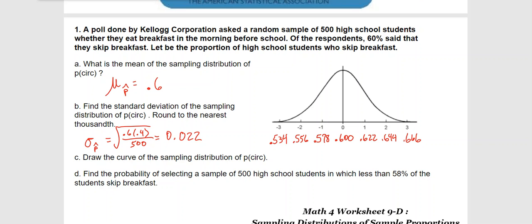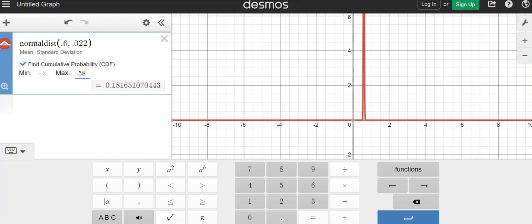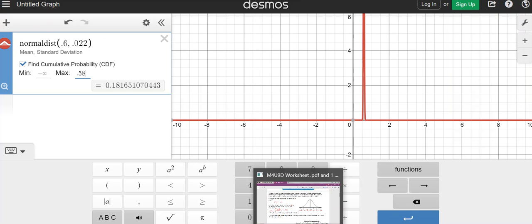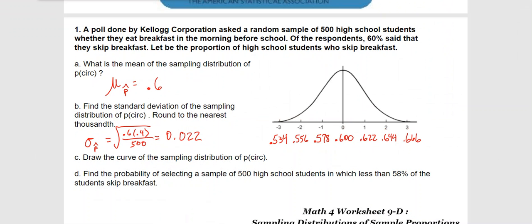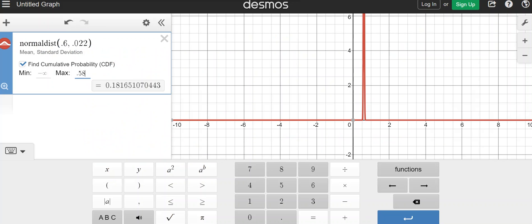Let's see what Desmos has to say about it. We've got 0.6 as the mean, 0.22 as the standard deviation, and everything 0.58 and below. It turns out to be 0.00165, which I think I had said about 16%, so I wasn't too far off. The probability is 0.165, so I'm supposed to say it's about 18.2%.